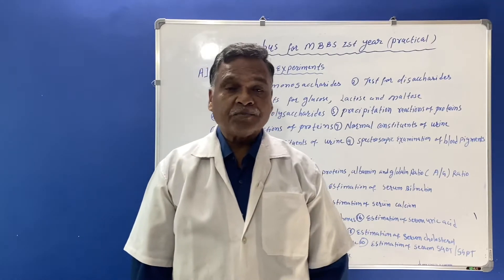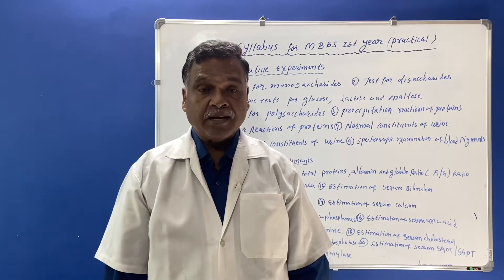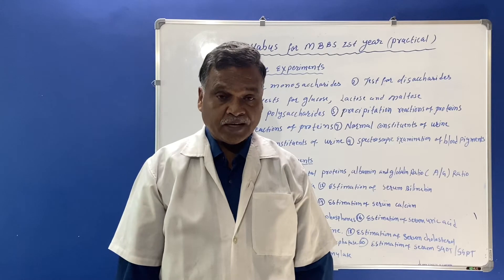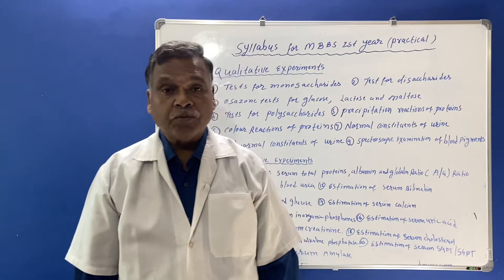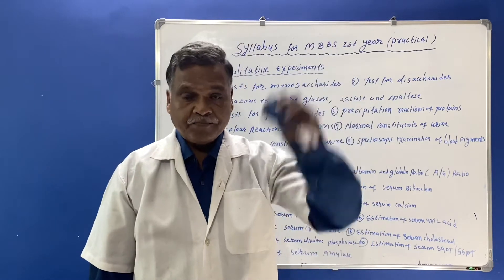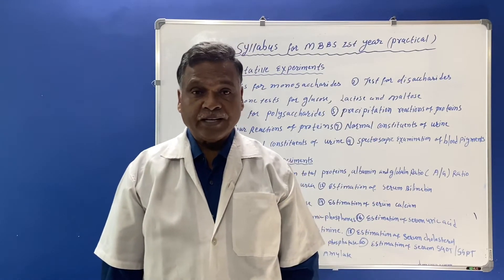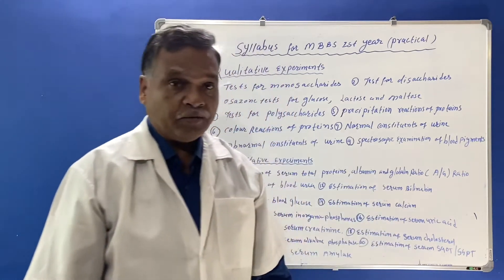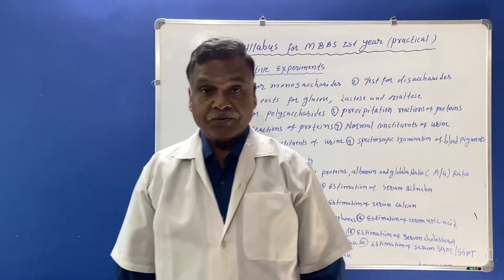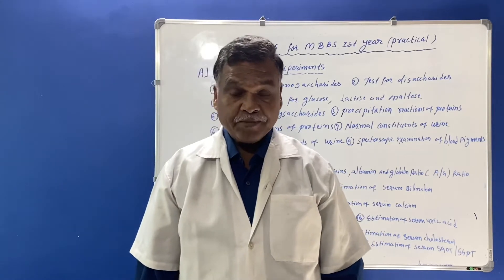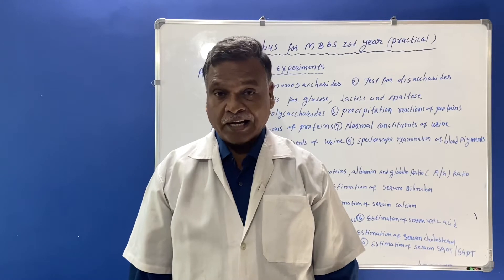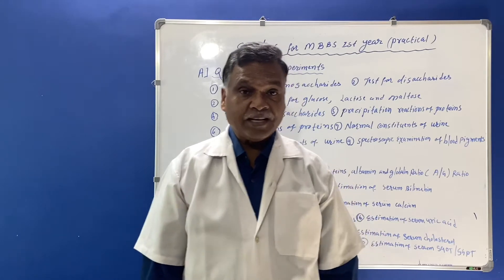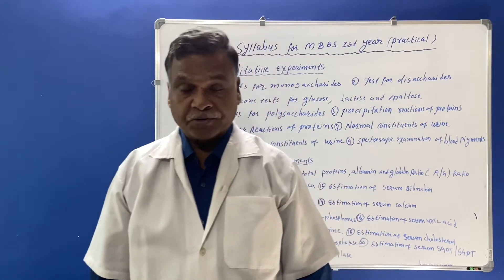Estimation of serum creatinine: the amount of creatinine present in the serum is to be found out by the students in the laboratory. Creatinine is a non-protein nitrogenous constituent. It is related to blood urea — if blood urea increases, serum creatinine is also found in increased amounts. Then estimation of serum cholesterol level: cholesterol is one of the important parameters in our body and must be estimated in the laboratory. The normal range is 145 mg/dL to 250 mg/dL.